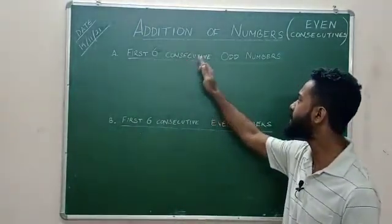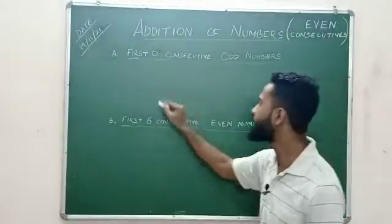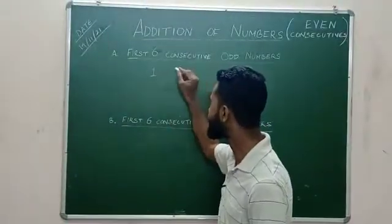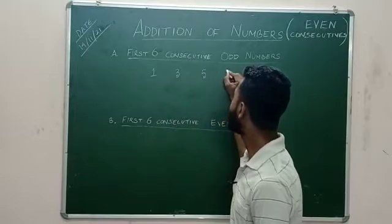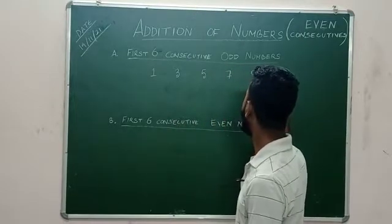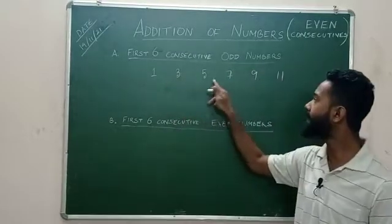Let us discuss the first six consecutive odd numbers. The consecutive odd numbers would be one, three, five, seven, nine and eleven. So this time we have six numbers.